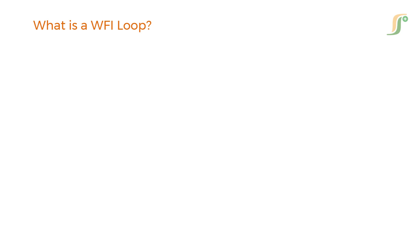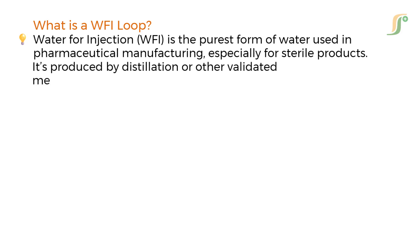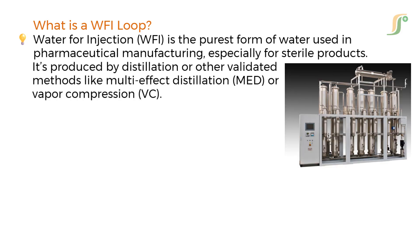What is a WFI loop? Water for injection is the purest form of water used in pharmaceutical manufacturing, especially for sterile products. It's produced by distillation or other validated methods like multi-effect distillation or vapor compression. But producing WFI is only the first step — the water must be stored, circulated, and delivered through a WFI loop, that is a closed, continuous piping system designed to maintain its quality.